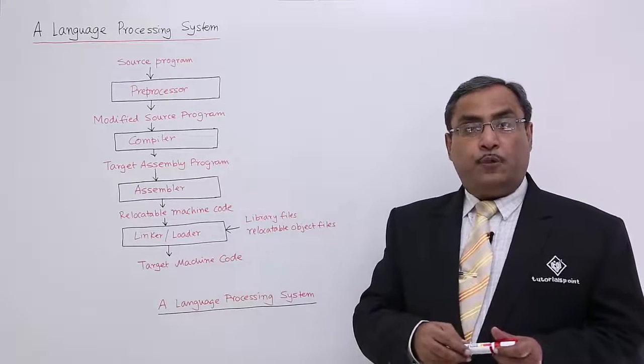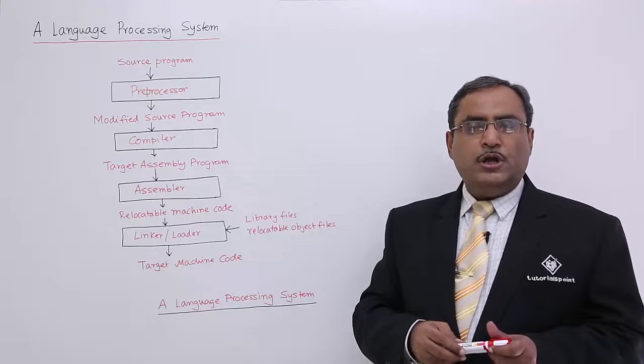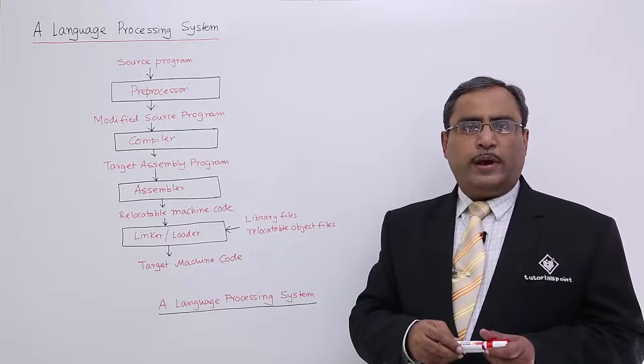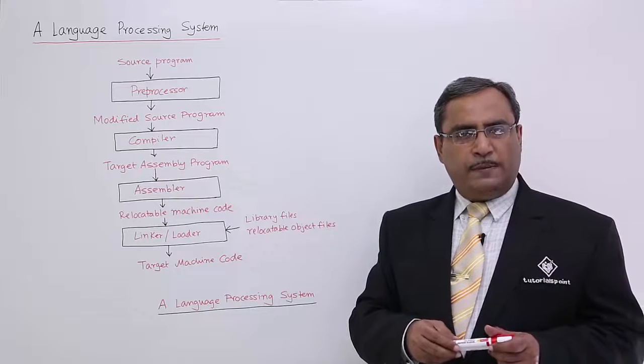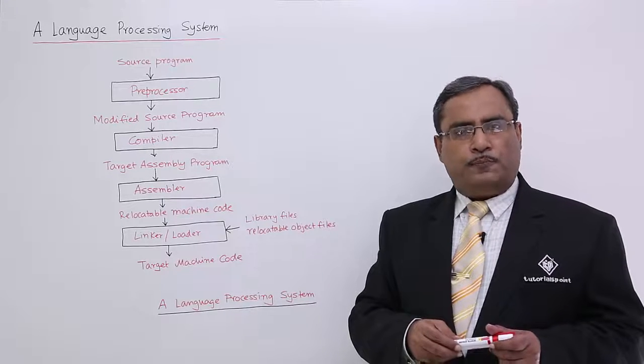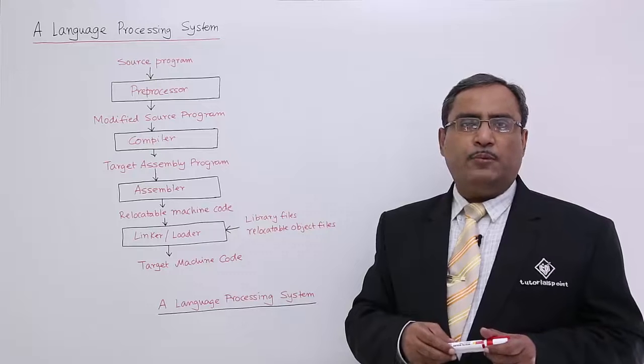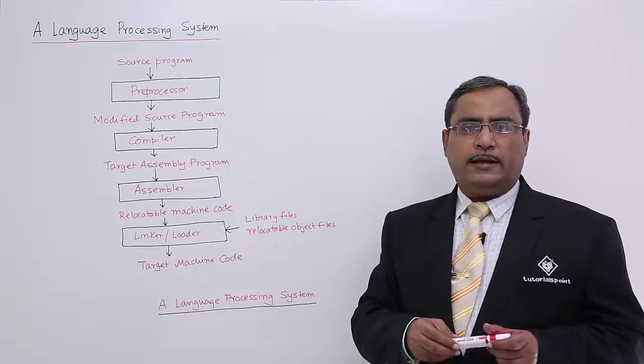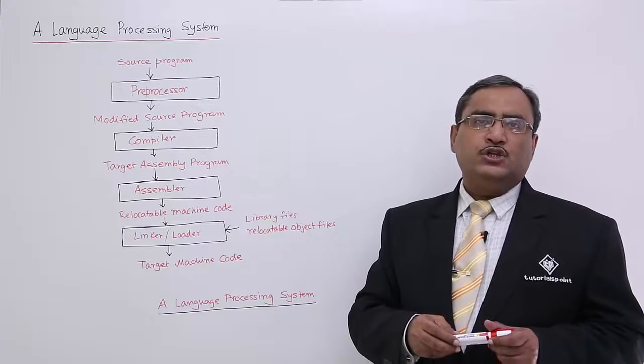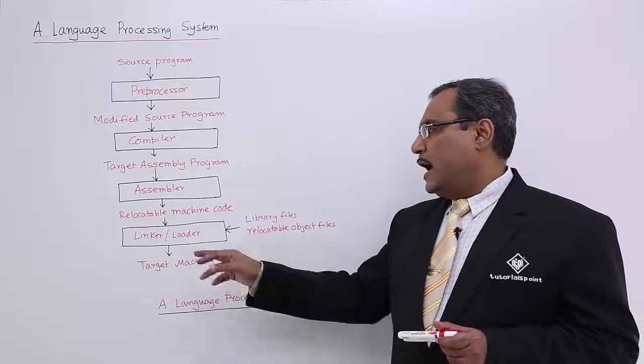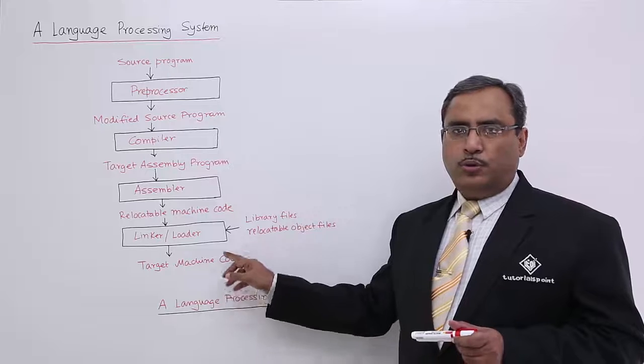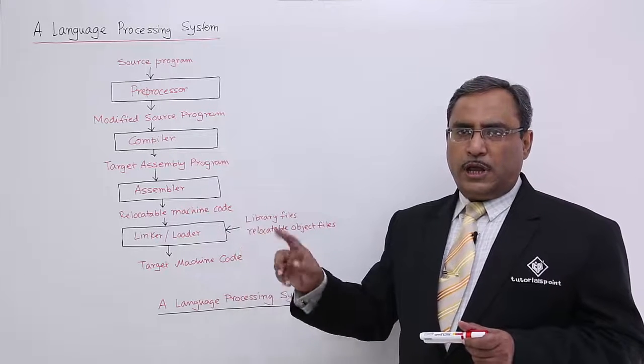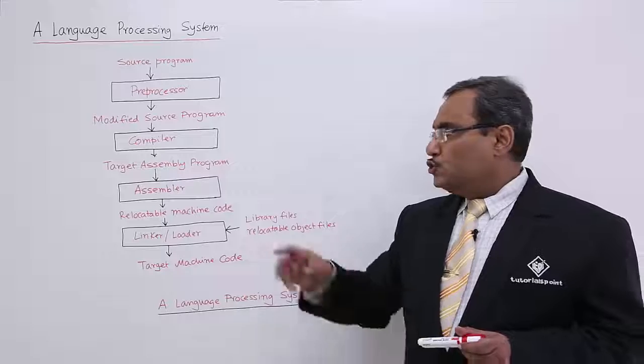Loader will come into the play when the program will be asked for execution. Each and every program is requiring some memory size to get loaded. The loader will check the available free memory holes or loader will check the available free memory blocks where this program can get loaded and can have its smooth execution. And this particular linker will produce this target machine code which will be loaded by the loader prior execution into the computer's memory.